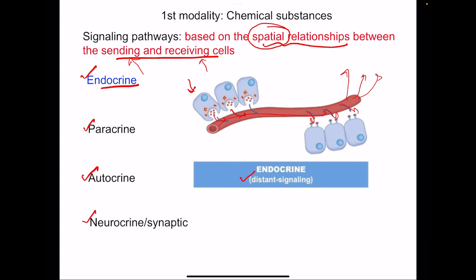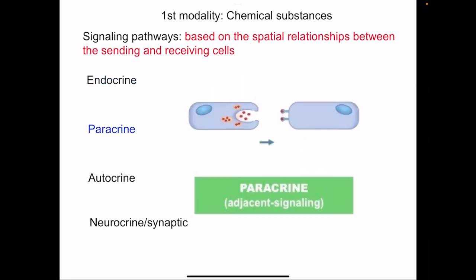Next comes paracrine signaling. In paracrine signaling, the sending cells and receiving cells are present adjacent to each other, and there is release of chemicals which act on the adjacent cells. Receptors for these chemicals are present on the adjacent cells. For example, the release of histamine by enterochromaffin-like cells in the stomach — this histamine is released locally and acts on the parietal cells, causing the stimulus for HCl secretion. So paracrine signaling is basically adjacent signaling.